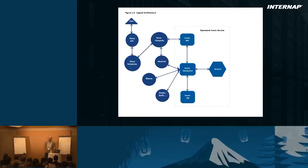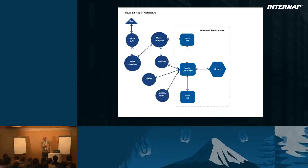We can see that Ironic is tightly integrated with the rest of the cloud. It talks to Nova, Neutron, and Swift. This tight integration is good, but there are some differences. Mainly, the Ironic API is not user-exposed — a user of the cloud cannot tap the Ironic API, contrary to most other OpenStack projects.